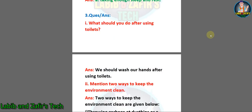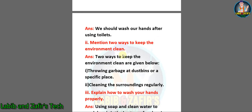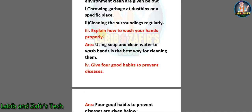So dear students, I have given the answers written by myself, and here are the questions that are given in the book. Number one: what should you do after using toilets? Answer: we should wash our hands after using toilets. Number two: mention two ways to keep the environment clean. Answer: two ways to keep the environment clean are — number one, throwing garbage at dustbins or a specific place; number two, cleaning the surroundings regularly. Number three: explain how to wash your hands properly. Answer: using soap and clean water to wash hands is the best way for cleaning them.